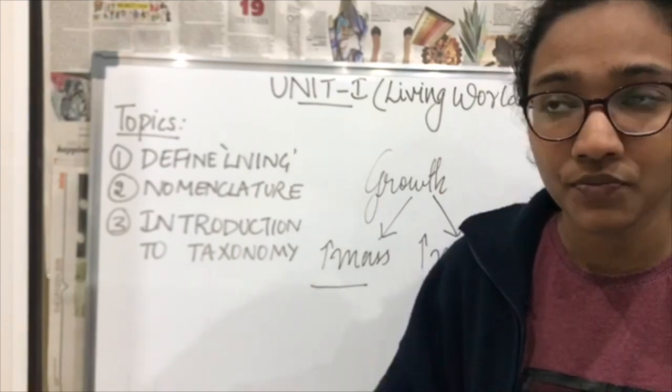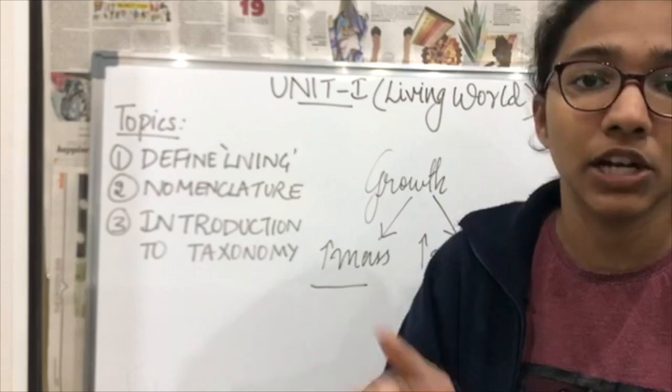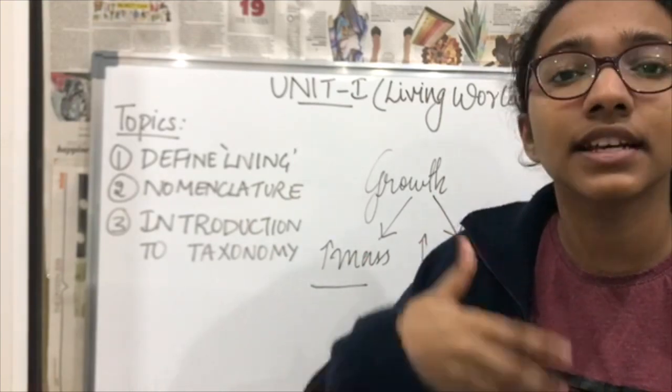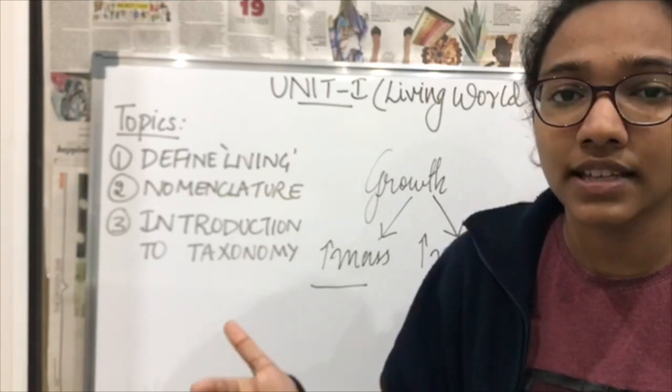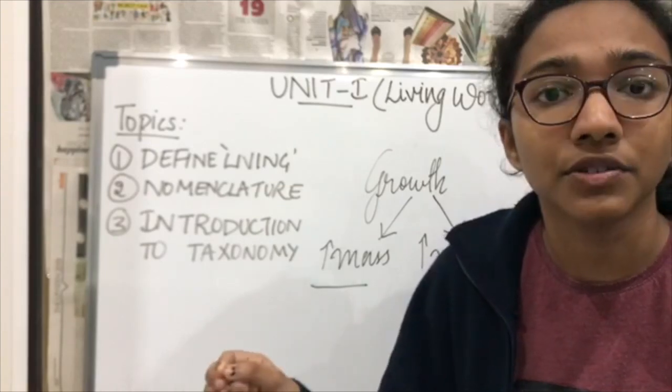The second factor we should consider is that there are certain organisms, for example mules. A mule is a hybrid of a female horse and a male donkey. This hybrid is a sterile organism, that is it can't reproduce. But you can't say that mule is a non-living organism just because it can't reproduce.